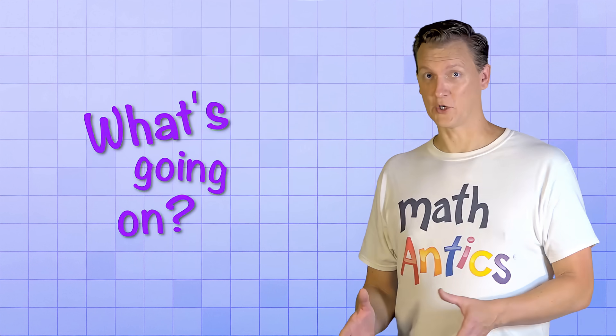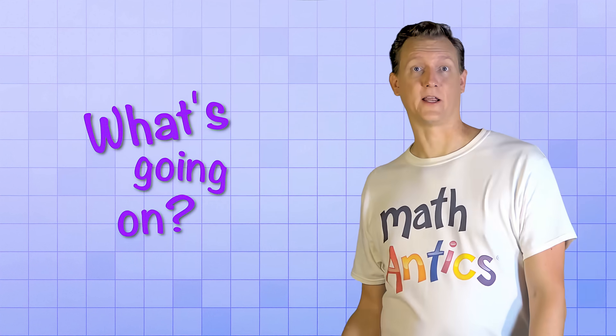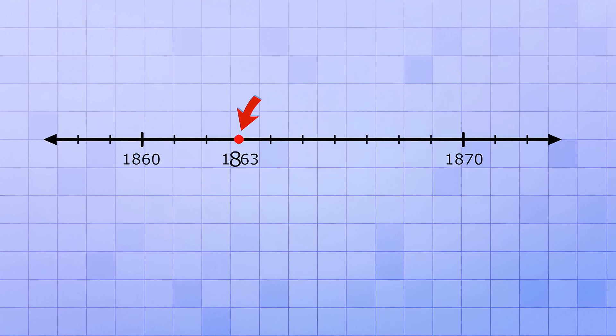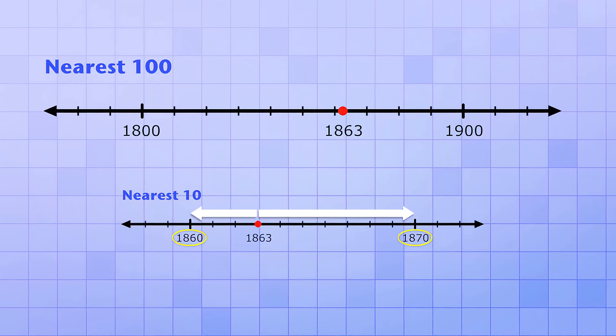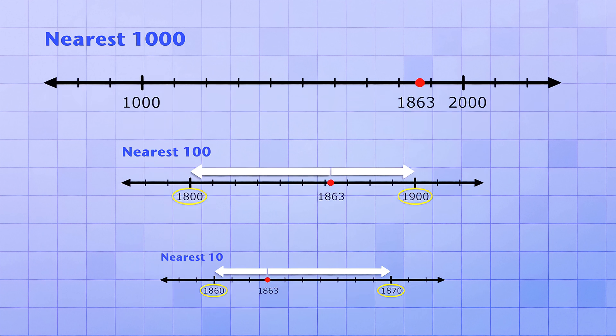So rounding a number basically means making a less precise version of it. And as you can see, there's usually multiple ways to round a number depending on the level of precision that you need. A really good way to understand what's going on when you round a number is to look at a number line. Here's 1,863. If we want to round it to the nearest 10, we need to decide if it goes up to 1,870 or down to 1,860. But if we want to round it to the nearest 100, we need to decide if it goes up to 1,900 or down to 1,800. And if we want to round it to the nearest 1,000, we need to decide if it goes up to 2,000 or down to 1,000. And in each case, the decision was based on which round number was closer to the original exact number.